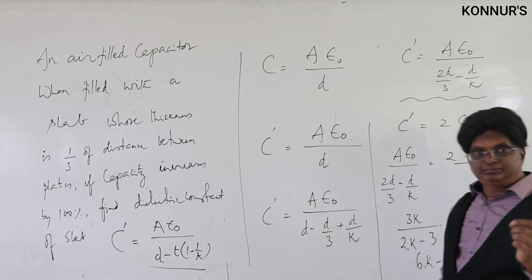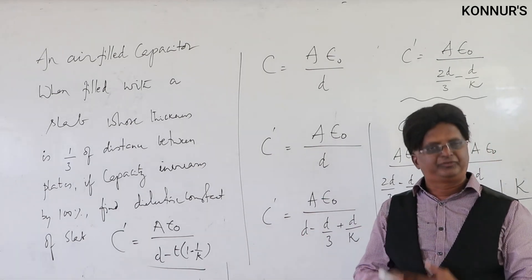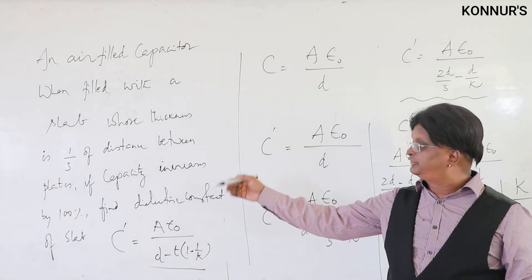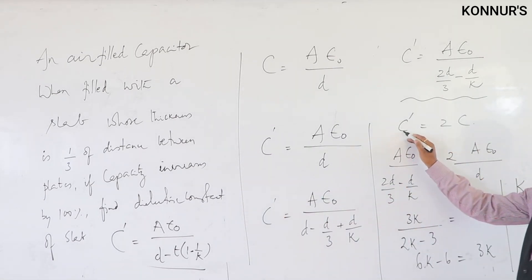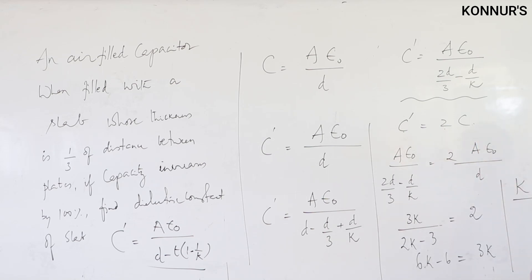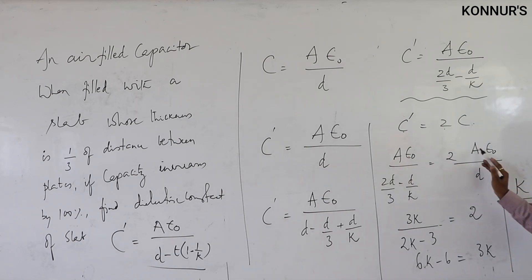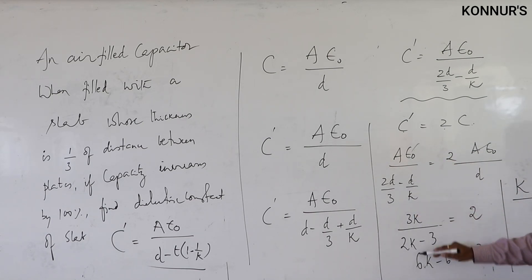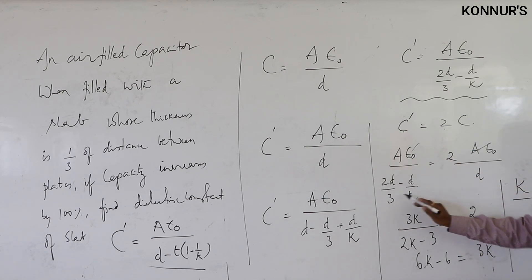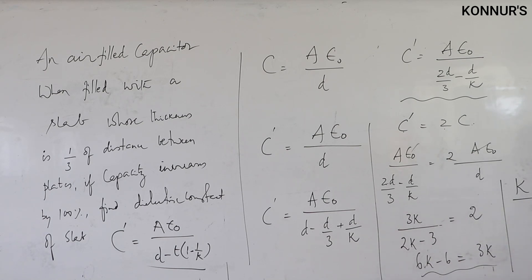The data states capacity increases by 100%, meaning C' = 2C. Setting C' = 2C and cancelling common terms Aε₀ and d, cross-multiplying gives 3K in the numerator equal to 2(2K – ... ), and the final answer is K = 2.